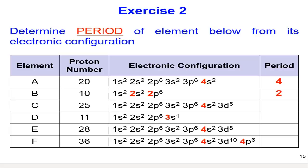For C, you can see here that the highest N value in this electronic configuration is 4. Therefore, C is in period 4.